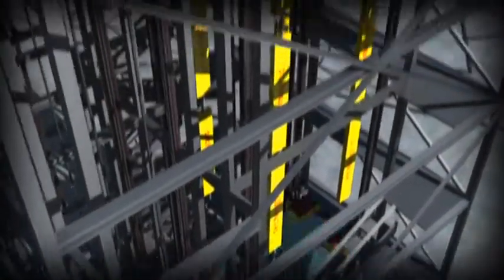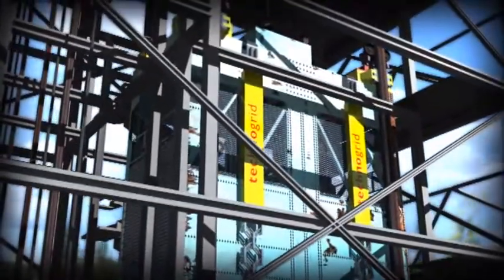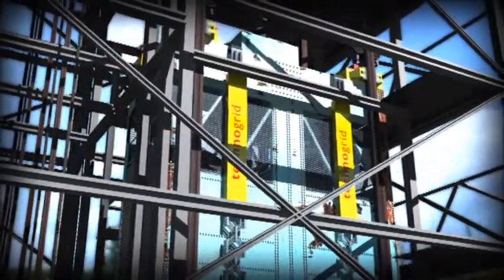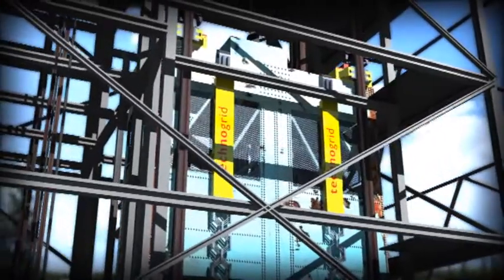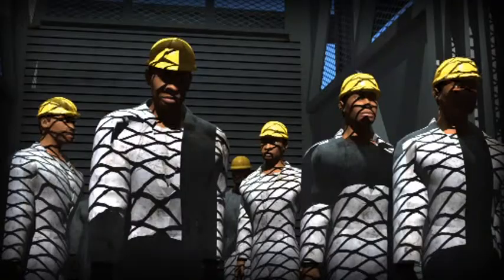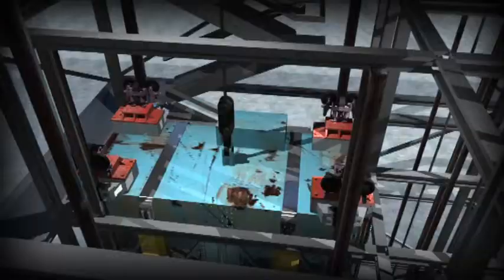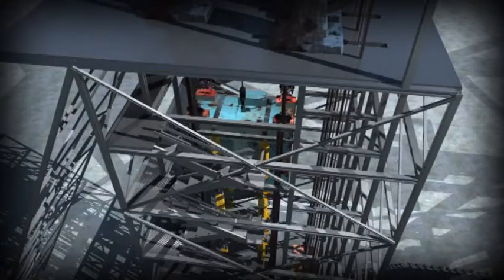In the event of overwind, Technogrid's units are pulled apart by the conveyance impact, placing the units in tension and initiating the safe absorption of kinetic energy. The conveyance occupants, headframe, and shaft structure are all protected.